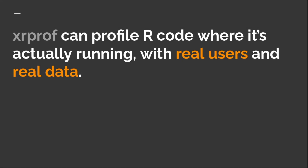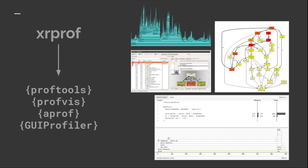XRProf can see and understand R programs running in all of those conditions and profile them without modifying them. This allows you to actually do your profiling with real users and real data, making it much easier to track down performance issues because you have data that's close to the source. XRProf is fundamentally designed to be a compatible drop-in replacement for Rprof — it produces the same format and works with all existing R ecosystem tools, and through format conversions, with the wider profiling world outside of R.